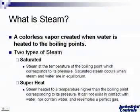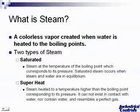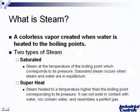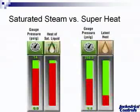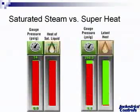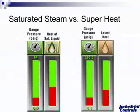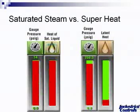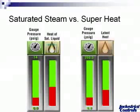Superheated steam you'll find more in the power industry. Superheated steam is steam heated to a temperature higher than the boiling point corresponding to its pressure. It cannot exist in contact with water nor contain water and resembles a perfect gas. This slide shows a saturated steam condition where we're discussing gauge pressures. As gauge pressure increases, heat or temperature increases; as gauge pressure decreases, you'll see our latent heat or BTU transfer increases.